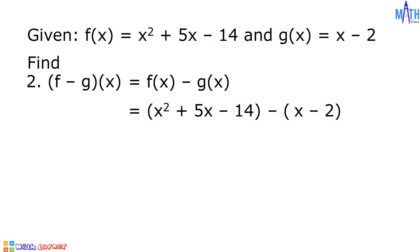To subtract this, change the sign of the subtrahend and proceed to addition. The subtrahend is x minus 2. Positive x becomes negative x, and negative 2 becomes positive 2. And then we will proceed to addition.